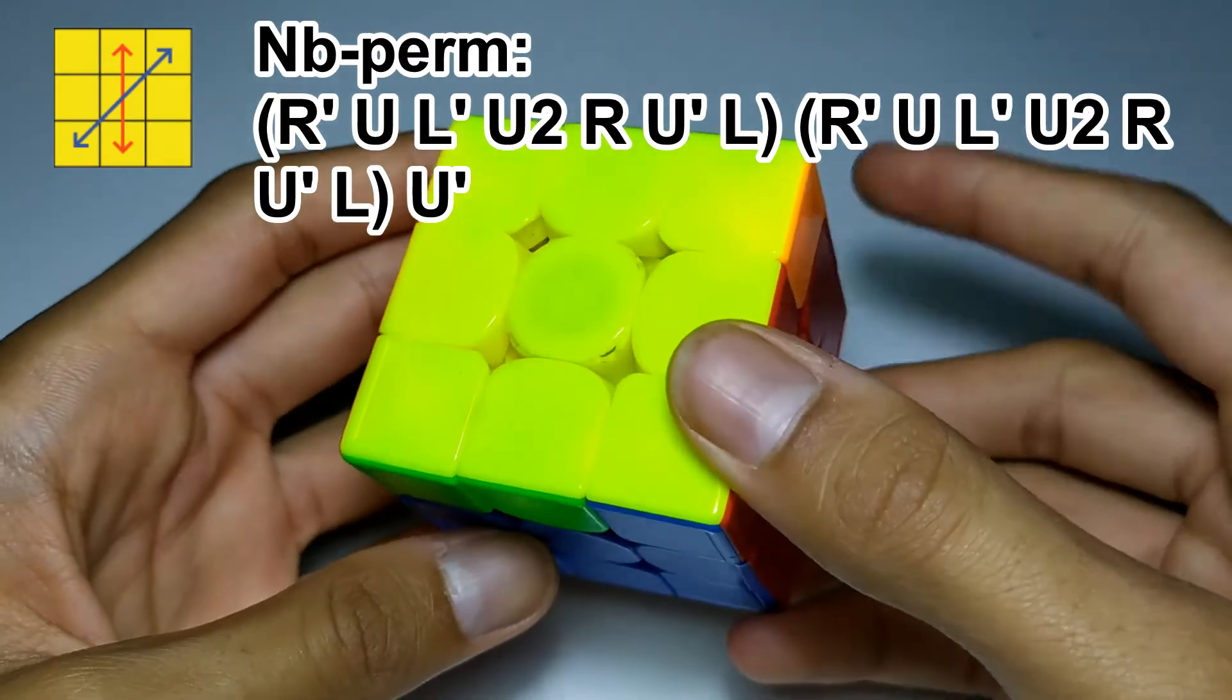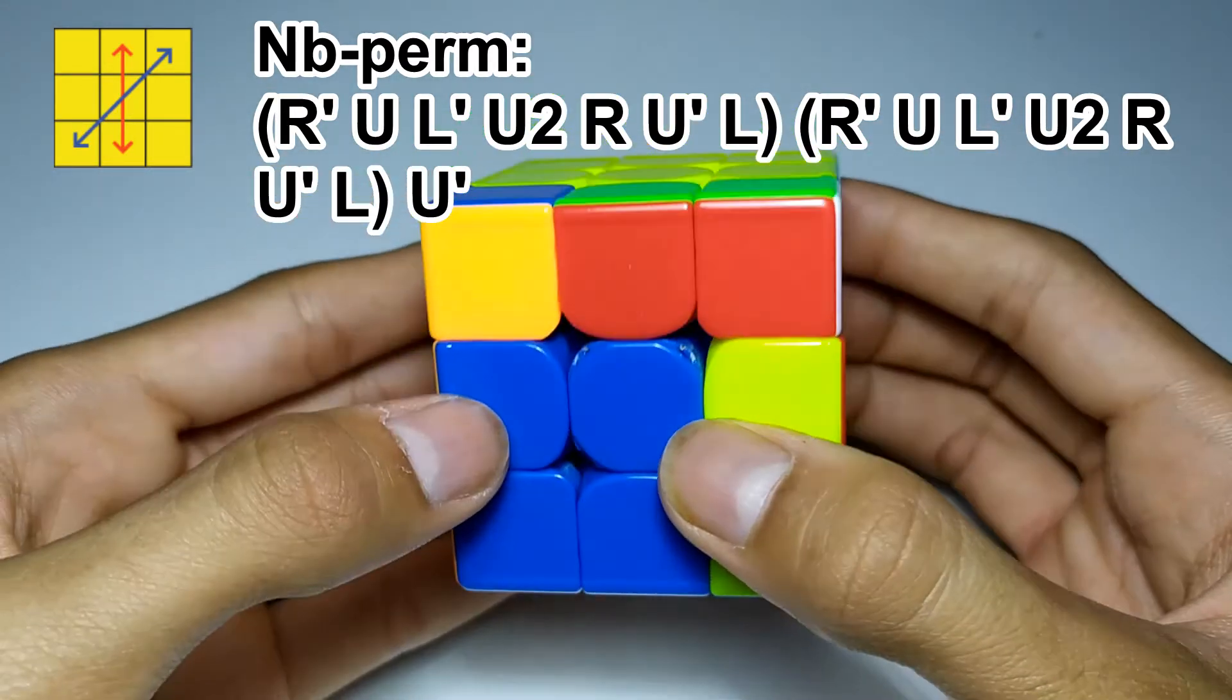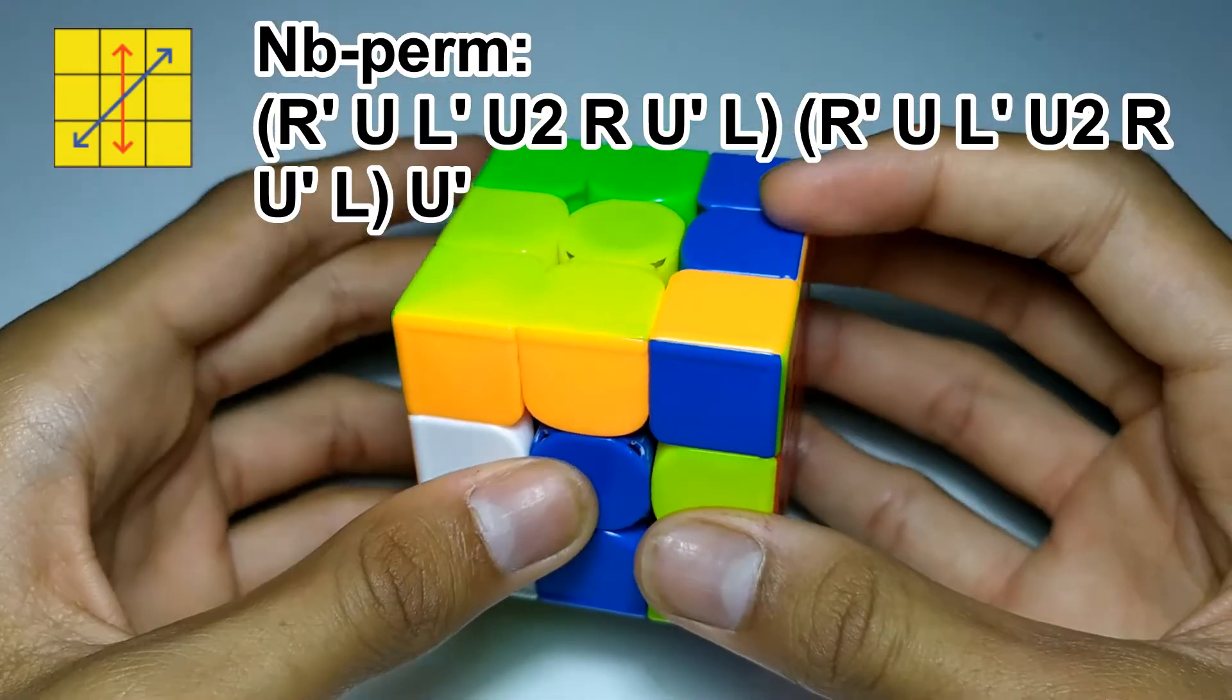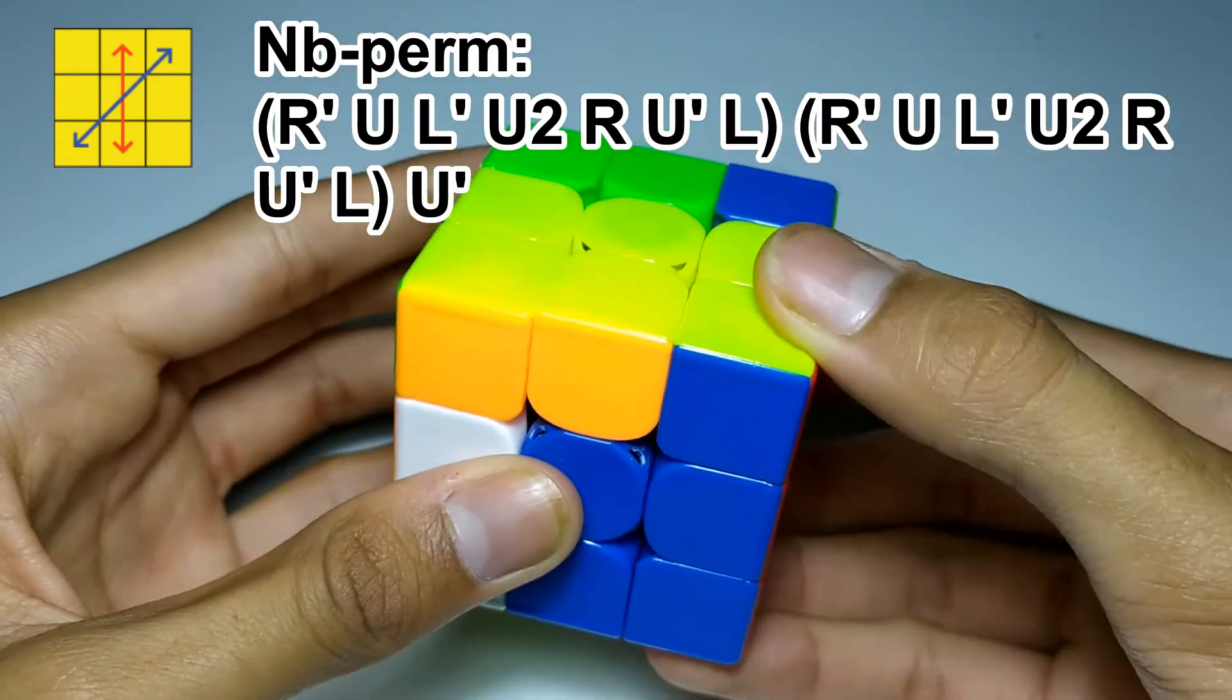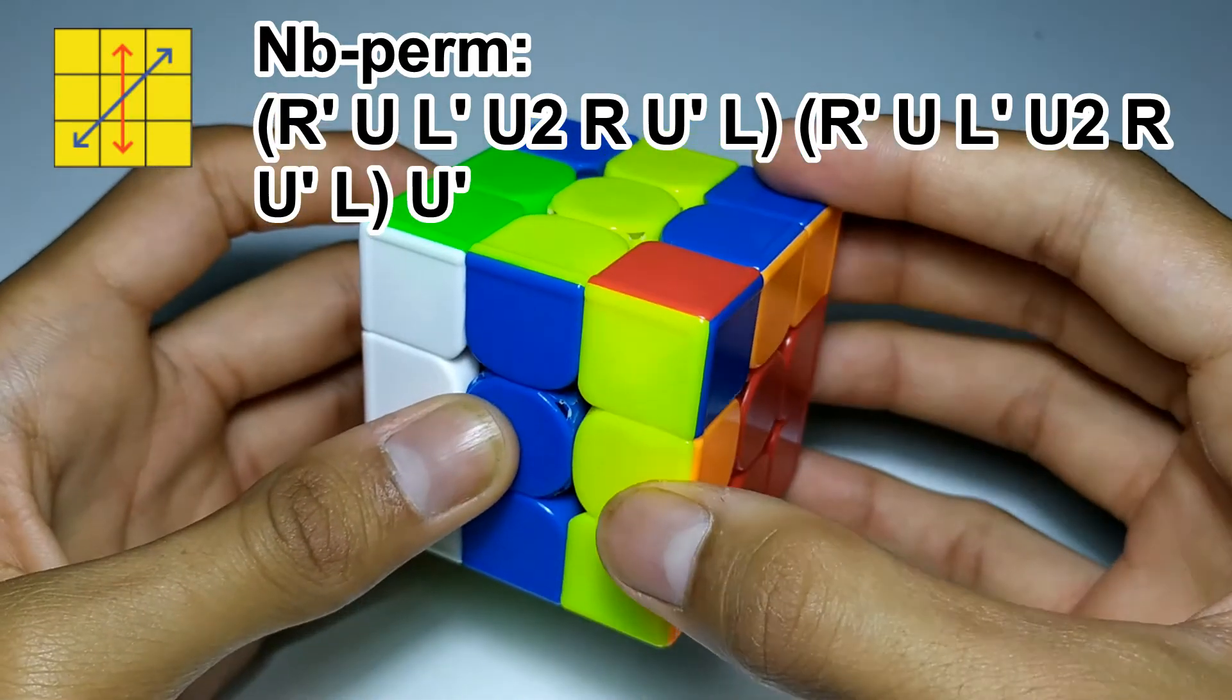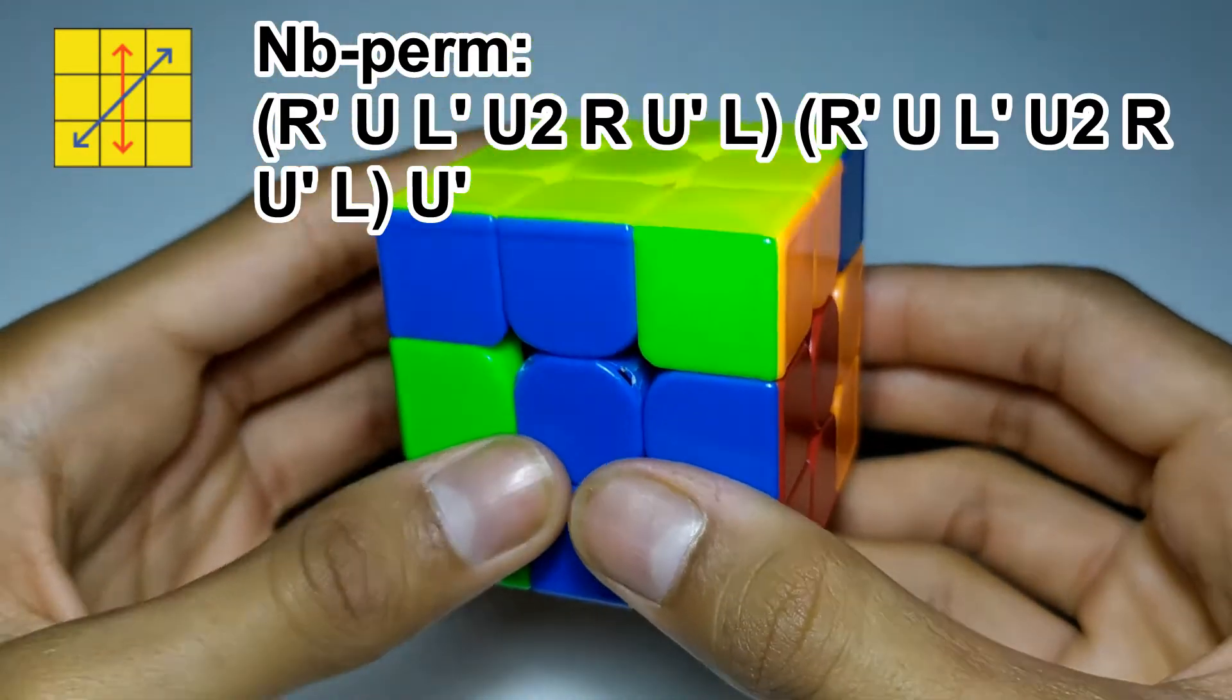So, we start by taking out this F2L pair, and then taking out this F2L pair. And then we can separate them by hiding this one and moving this one over. But then here, instead of doing the R' we would instead do an L, and then repeat those seven moves.